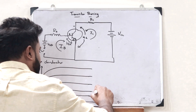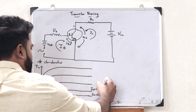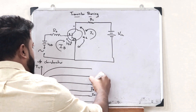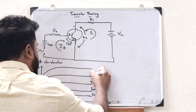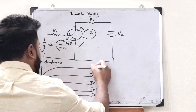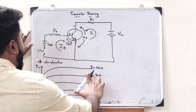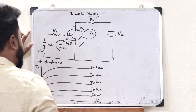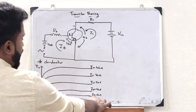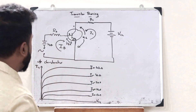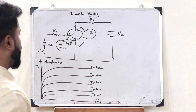The output characteristics is plotted for different values of base current IB: IB equal to 0 microampere, 10 microampere, 20 microampere, 30 microampere, and 40 microampere. For these different values of IB, we are plotting the output characteristics, that is the value of VCE versus IC. This is the basic output characteristic of this particular transistor.